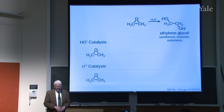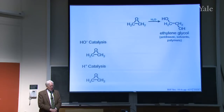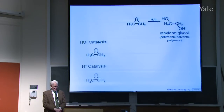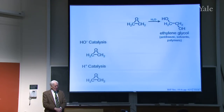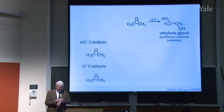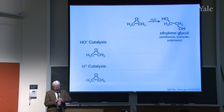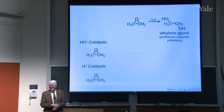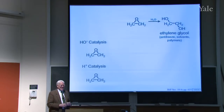That reaction changing ethylene oxide into ethylene glycol occurs either with base catalysis or acid catalysis. Since the focus of this lecture has been on these mechanisms, we'll talk about those mechanisms next time.